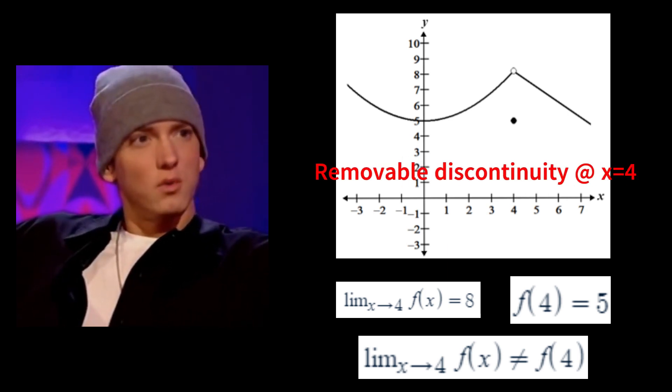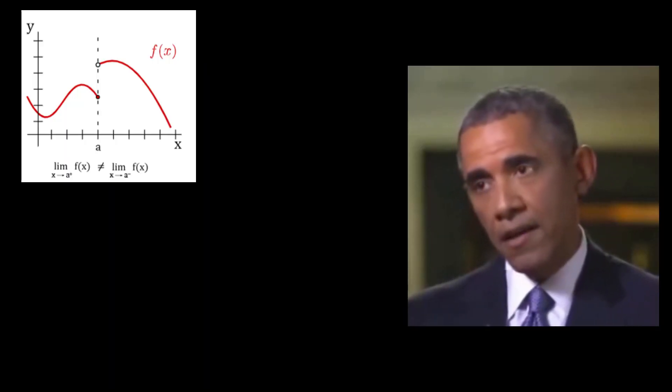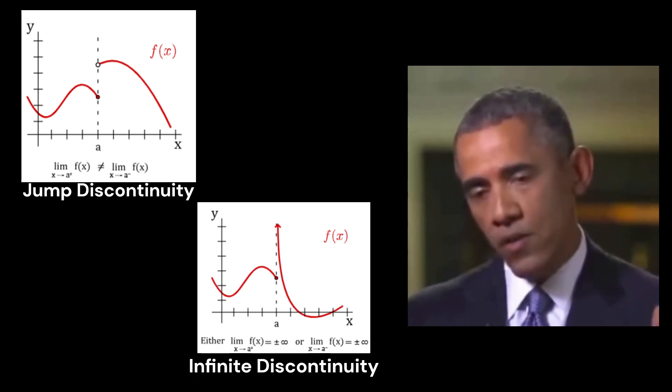Precisely. Continuing on, see what I did there? If the left-handed limit as x approaches a does not equal the right-handed limit, then we have a jump discontinuity. And then infinite discontinuity occurs when the function approaches infinity from either side as x approaches a.